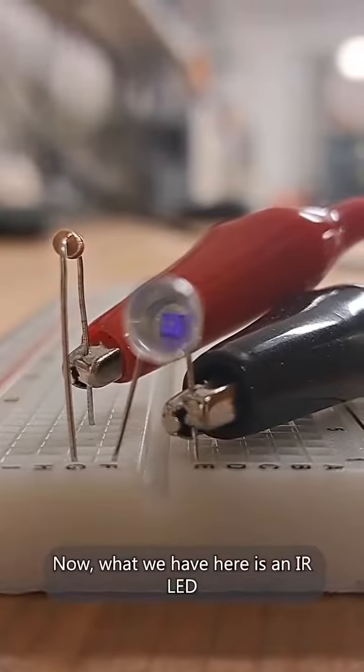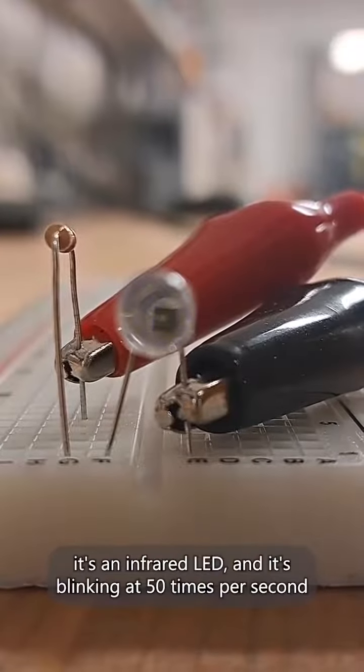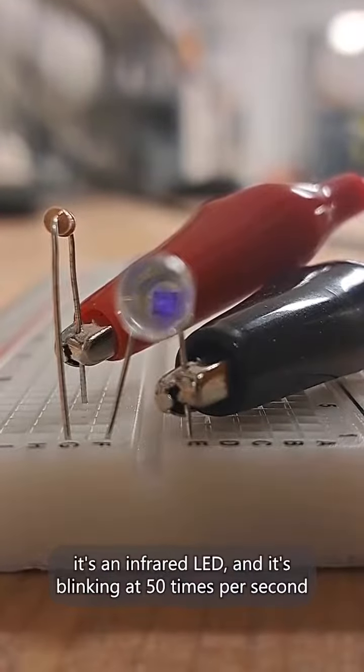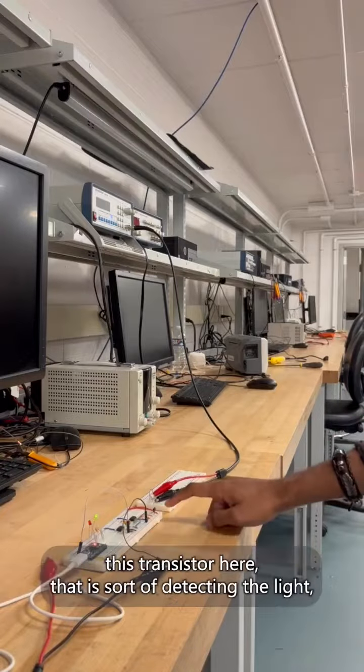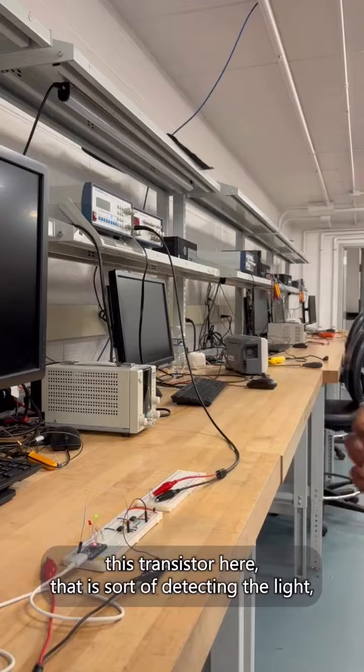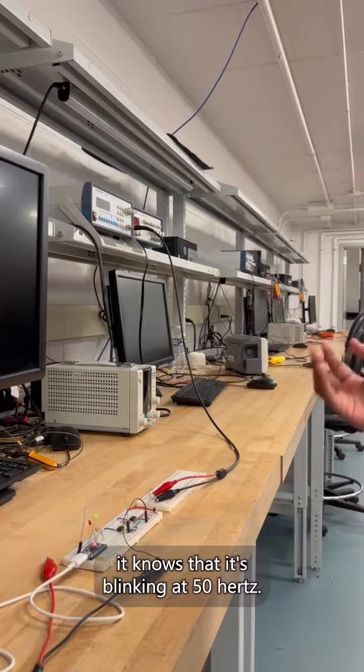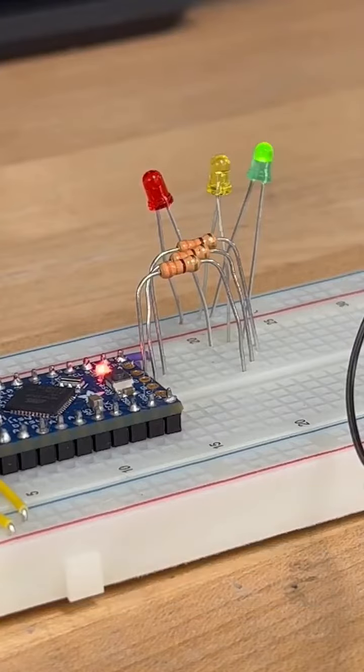Now what we have here is an IR LED—it's an infrared LED and it's blinking at 50 times per second. And you can see that the detector circuit and specifically this transistor here that's detecting the light, it knows that it's blinking at 50 hertz, so it turns on the green LED.